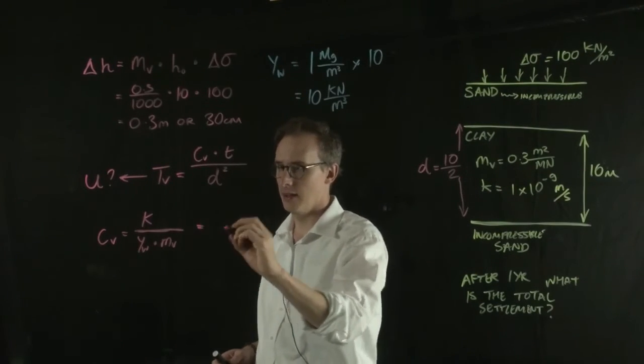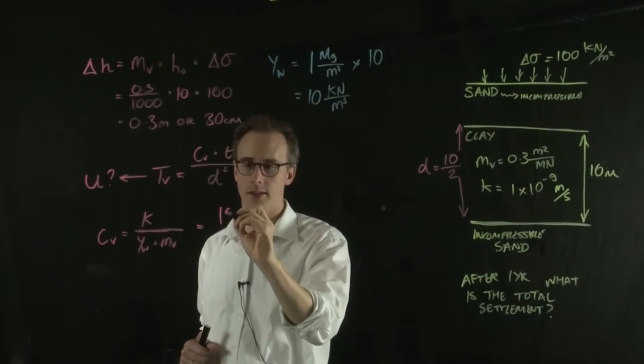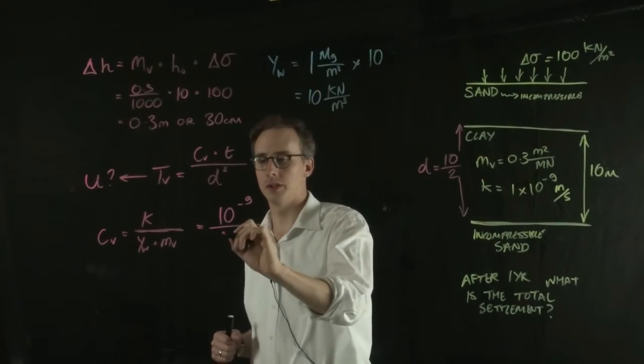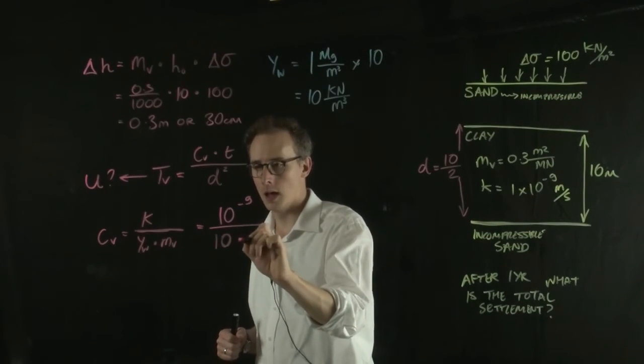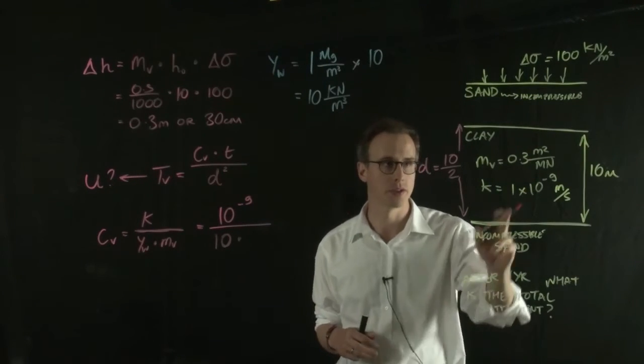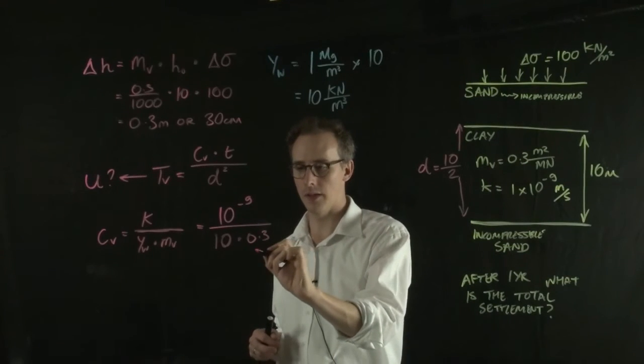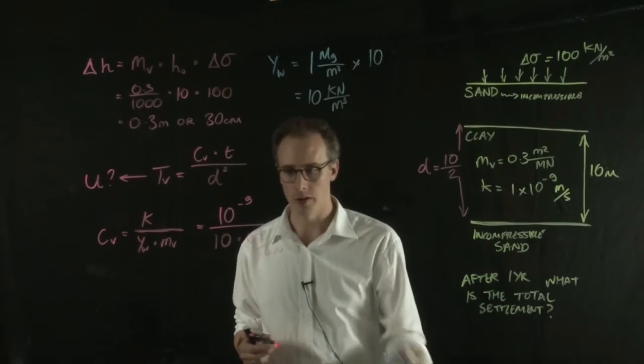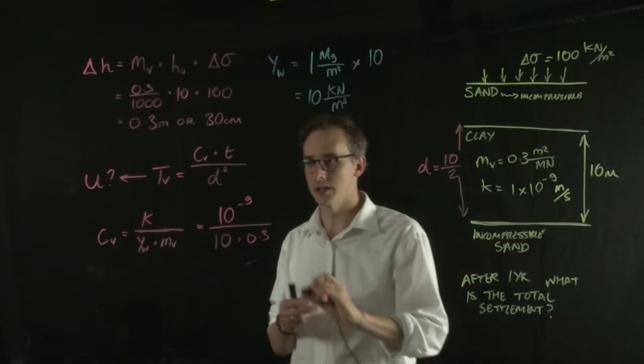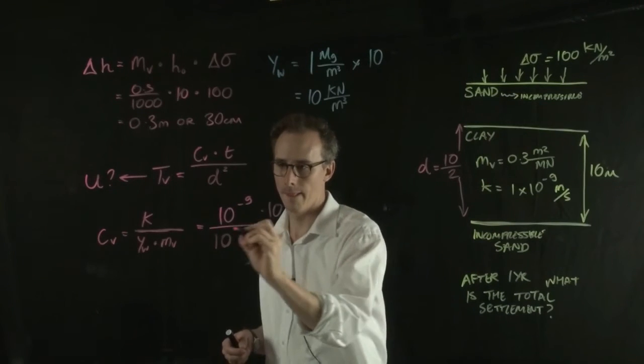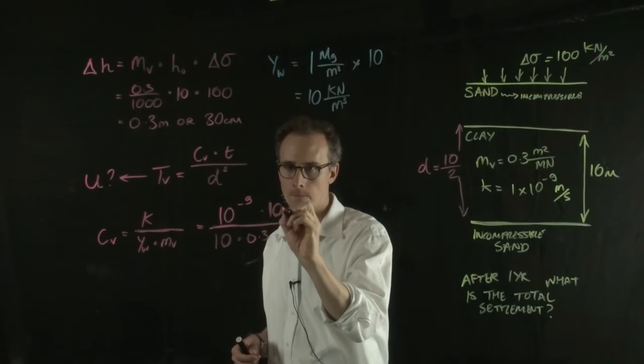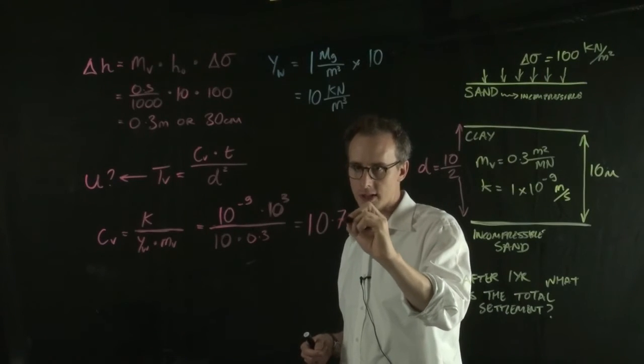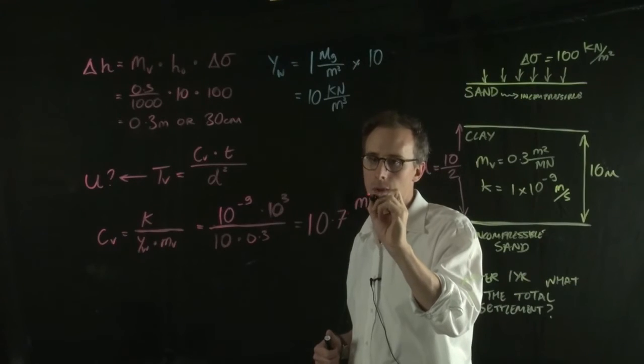So your CV value equals your permeability, which is 10 to the minus 9 metres per second, divided by your unit weight of water, which is 10, multiplied by the MV value, which is 0.3. And we divide that by 1,000 to convert it into metre squared per kilonewton. So we can, instead of putting the 1,000 down here, we can just multiply the top by 1,000. So our CV value comes out at 10.7 metres squared per year.